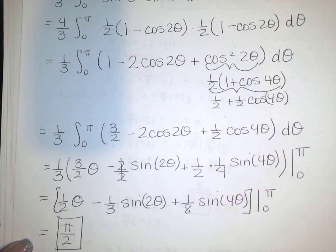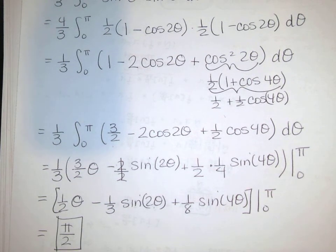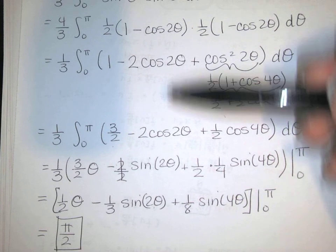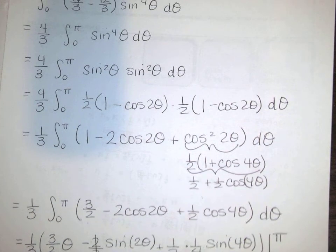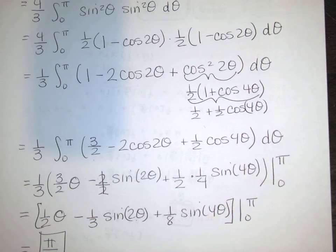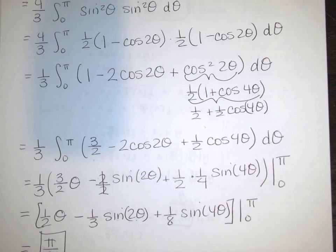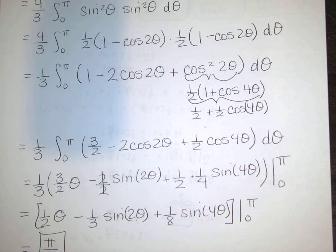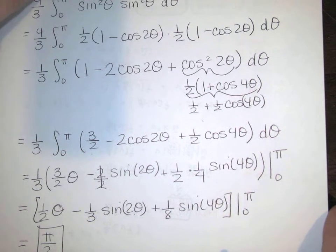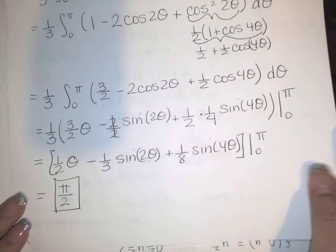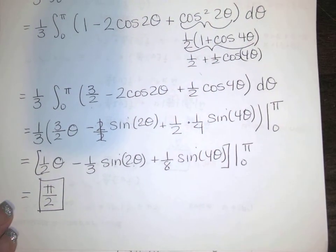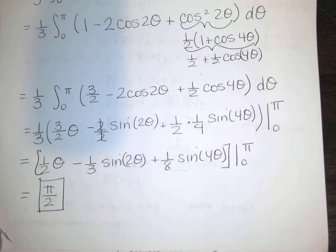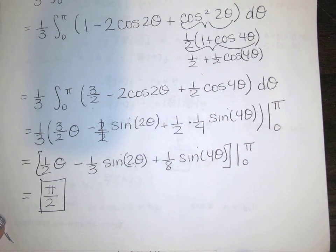So the volume is π/2, which is exactly the same value we got without switching to polar coordinates. There was a lot of calculation involved, but this was much, much easier than using rectangular coordinates, which required completing the square, a trig substitution, trig integration, and back-substitution — so involved I couldn't show the whole example in a one-hour video. Here I was able to do several examples and get through the whole problem by switching to polar.